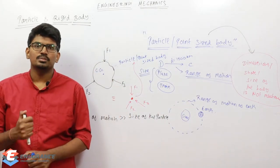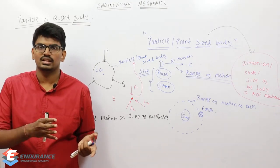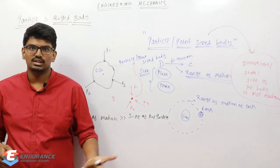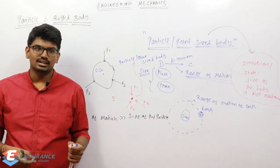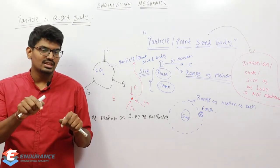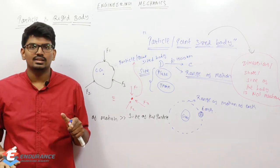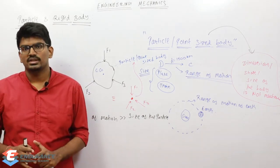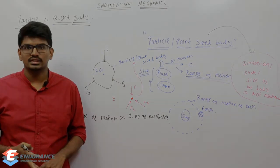For example, in a problem they give you a car traveling a distance of 100 kilometers at a speed of 20 kilometers per hour — find the acceleration or something like that. In that case, they didn't talk about the dimensions of the car. So I can treat the car to be a point-sized body. Remember this. We will proceed to rigid body next.